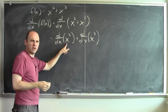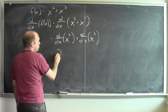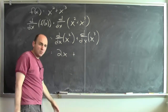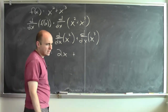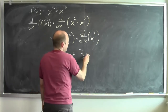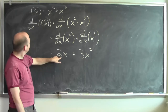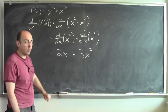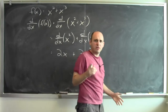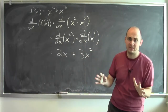I know how to differentiate x squared by the power rule, so this is 2x. And I know how to differentiate x cubed by the power rule — it's 3x squared. So that's the derivative of the function f at the point x, calculated by knowing that the derivative of the sum is the sum of the derivatives, provided the derivatives exist.